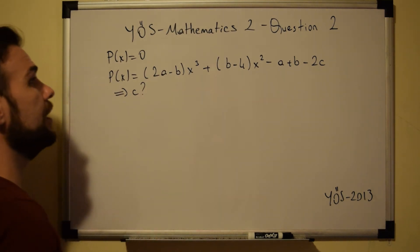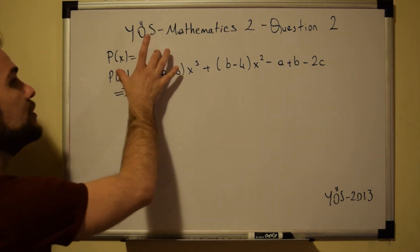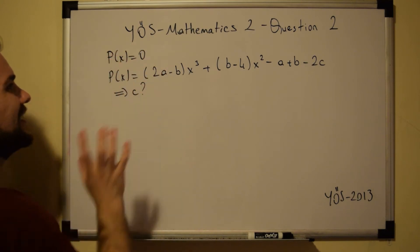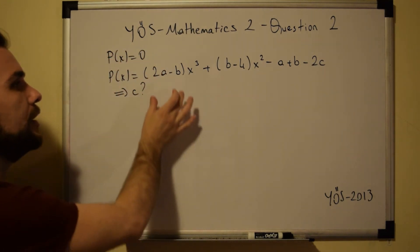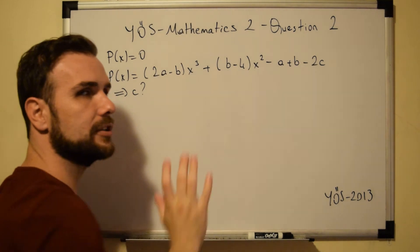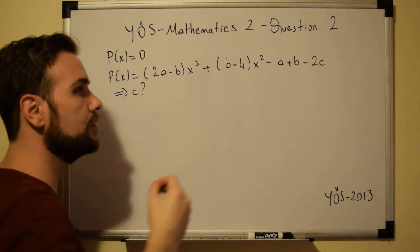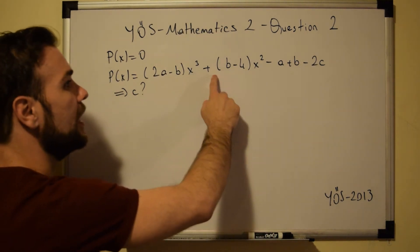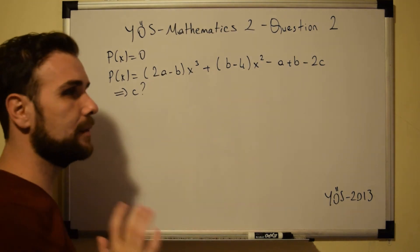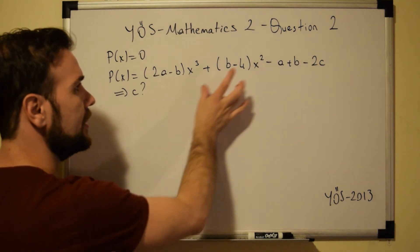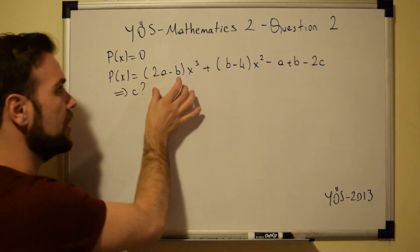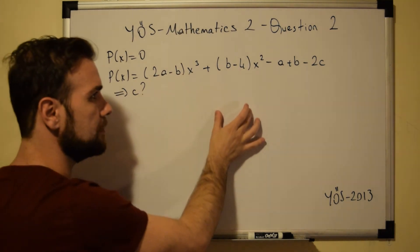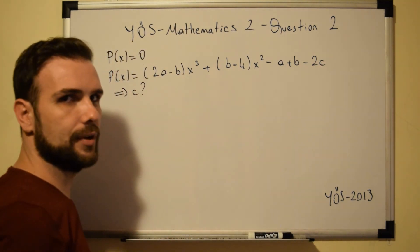Since we know that P(x) equals 0, we have to set each part of this expression equal to 0 — separately for each part. So we have to equalize the coefficient of x cubed to 0, the coefficient of x squared to 0, and the constant term to 0 as well.